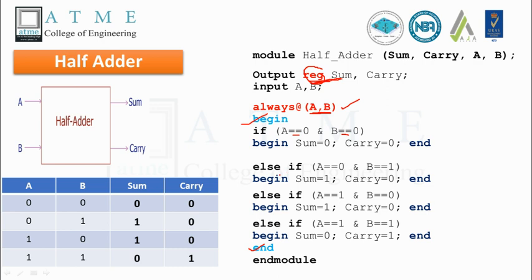Using if/else-if statements similar to C, conditions are checked: if a equals zero and b equals zero, sum and carry are assigned zero; else if a equals zero and b equals one, proper values are assigned, and so on for all combinations. One important note: behavioral statements execute sequentially, one after the other, unlike gate-level and dataflow descriptions which are concurrent.